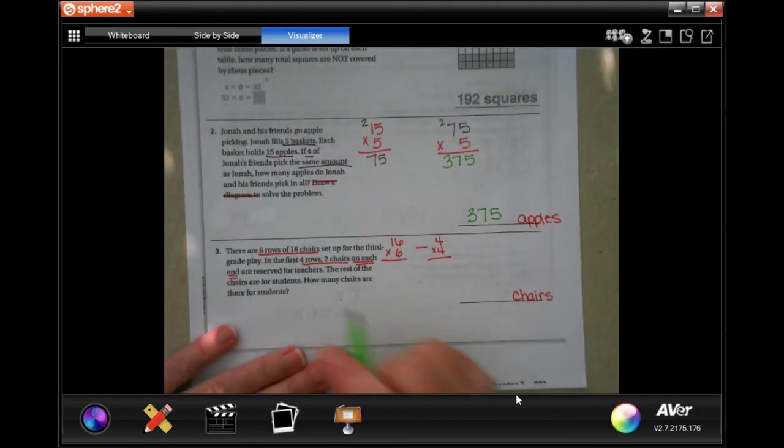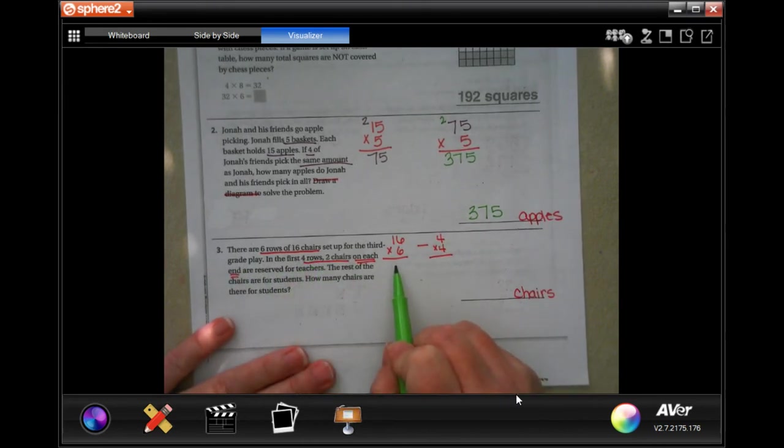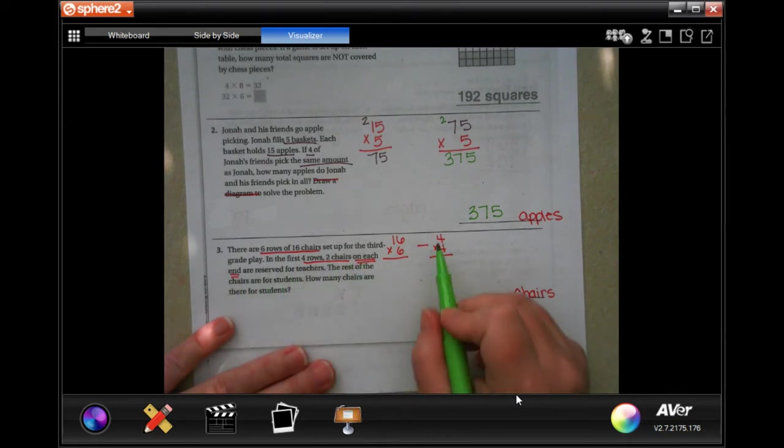Now, this one says there are six rows of 16 chairs for the third grade play. In the first four rows, two chairs on each end. So that's four chairs per row. Are reserved for teachers. The rest are for students.